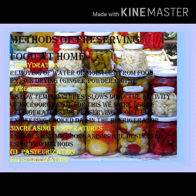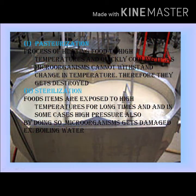3. Increasing temperature — with the help of an increase in temperature, enzymes and microorganisms are destroyed. There are two methods for increasing temperature. 1. Pasteurization — pasteurization is basically the process of heating food to a high temperature and quickly cooling it. As microorganisms cannot withstand the change in temperature, they get destroyed. Milk is commonly pasteurized.